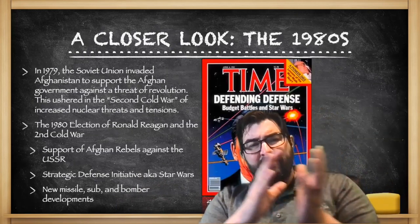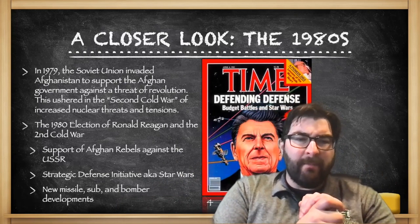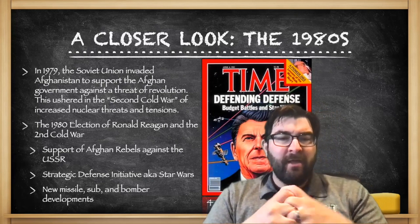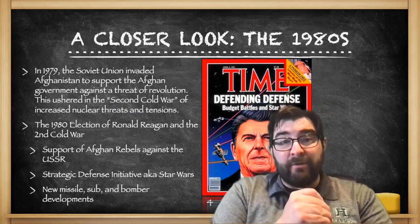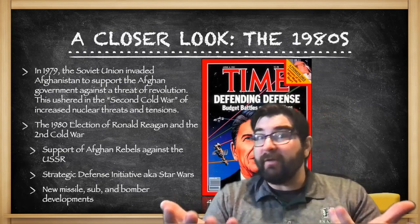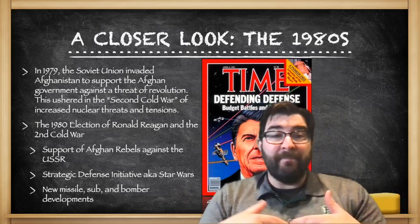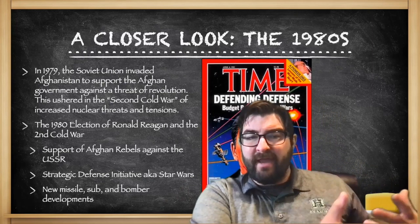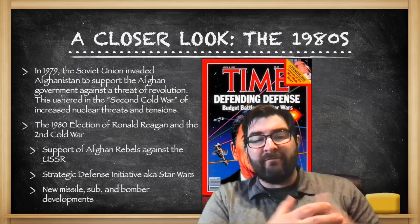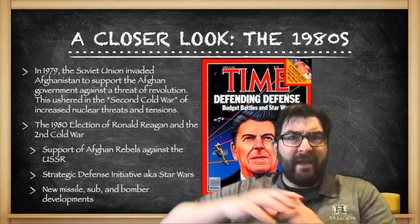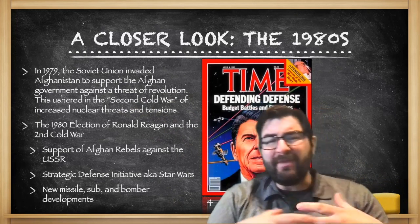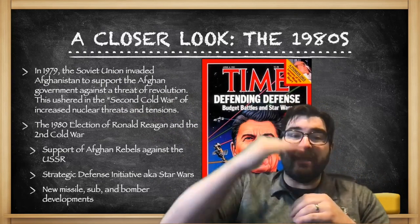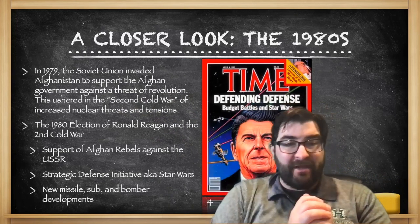As we move into the 1980s, detente is going to come to an end, and we enter a final phase of the Cold War. In 1979, the Soviet Union invaded Afghanistan. This is one of those proxy wars. They invaded in order to support, in their words, the Afghan government against a threat of revolution, like the revolution that had just happened in Iran. This ushered in what we call the Second Cold War, resuming tensions and nuclear threats.